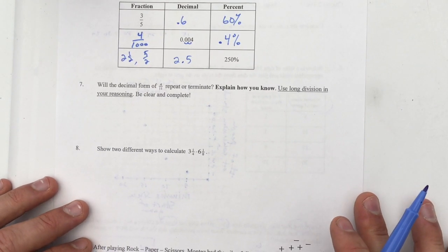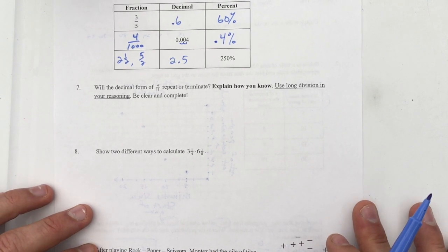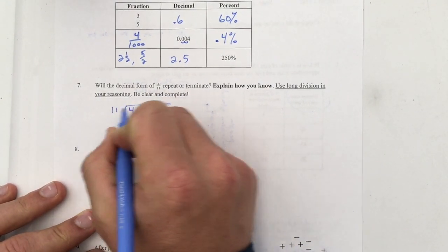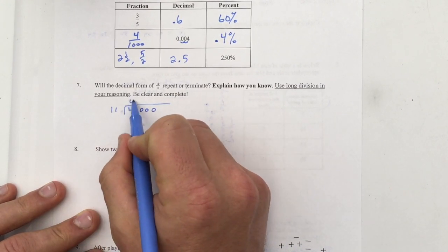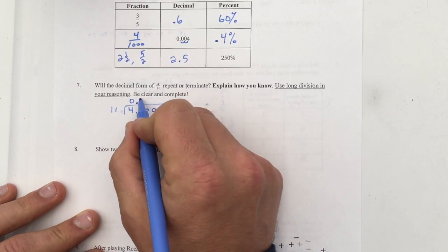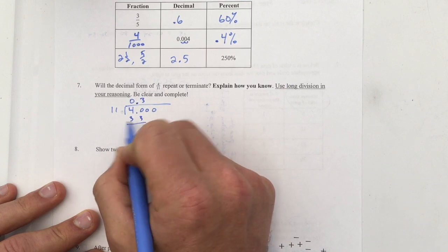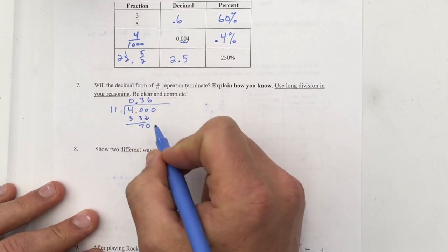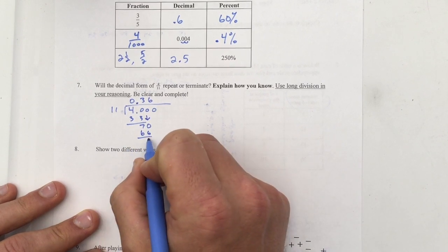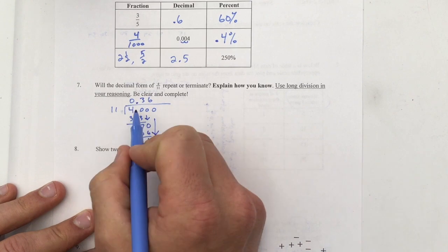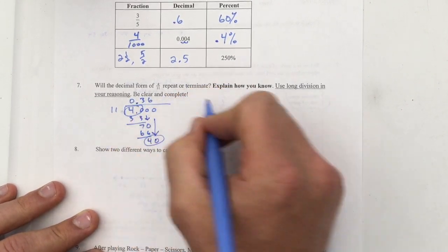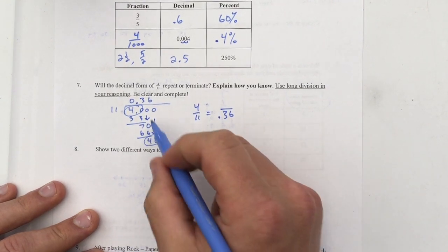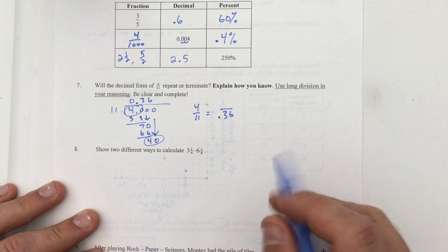Number seven, will the decimal form of 4/11 repeat or terminate? Explain how you know, use long division in your reasoning. Be clear and complete. Well, first of all, I want to make sure that I'm doing four divided by eleven and not the other way around. So eleven goes into four zero times. Bring the decimal up. Eleven goes into forty three times. Three times eleven is thirty-three. My remainder is seven. So I'm going to bring the zero down. Eleven goes into seventy six times. Six times eleven is sixty-six. My remainder is four. Bring this down and I get forty. I have the same remainder again. So I know that this is going to repeat. 4/11 equals 0.36 with a line over both numbers because it repeats because I see the same remainder again.